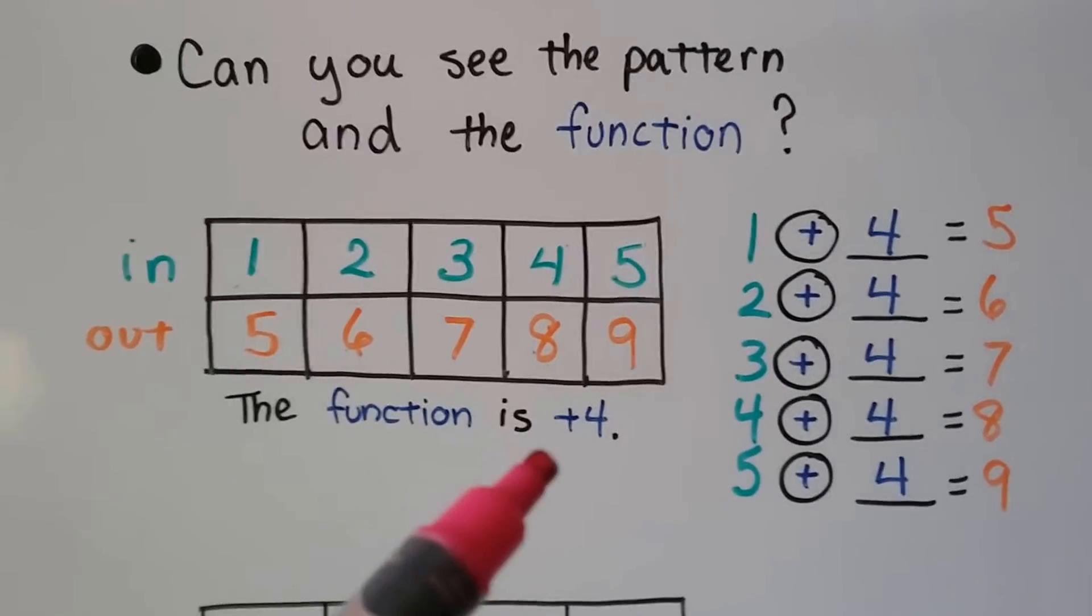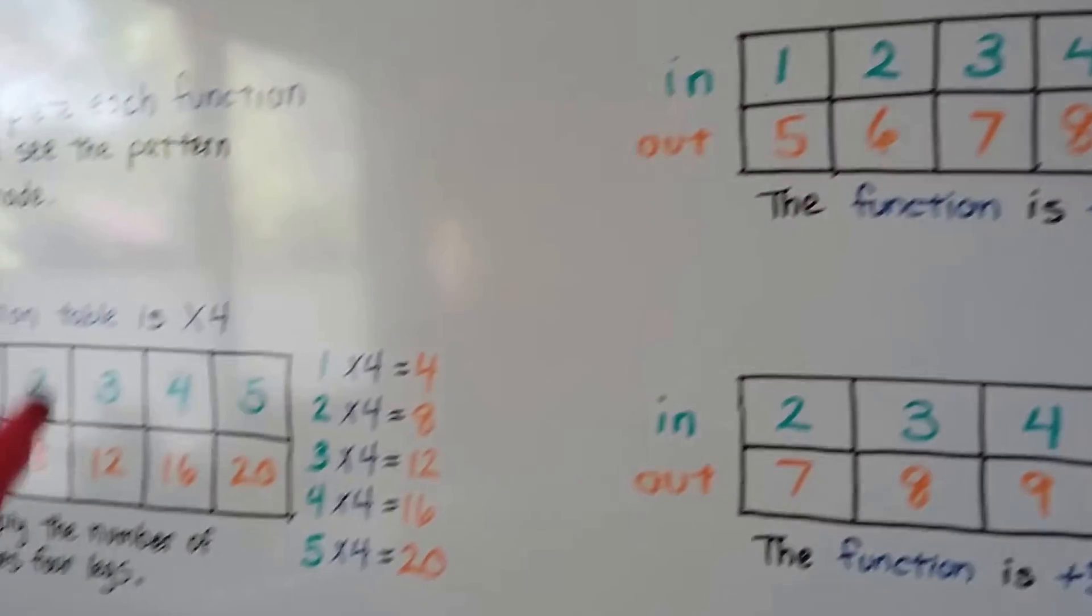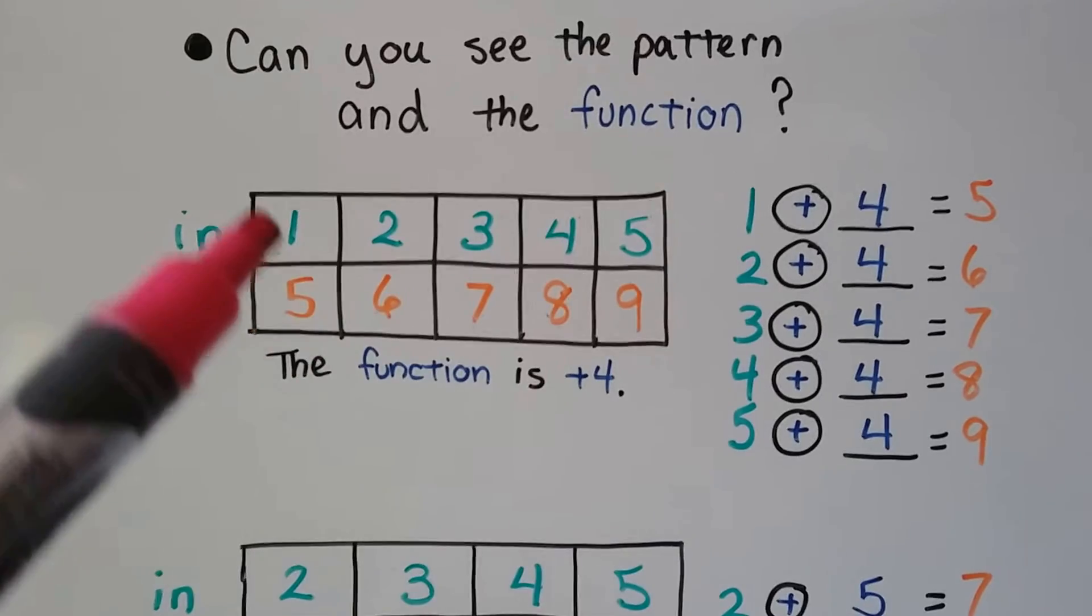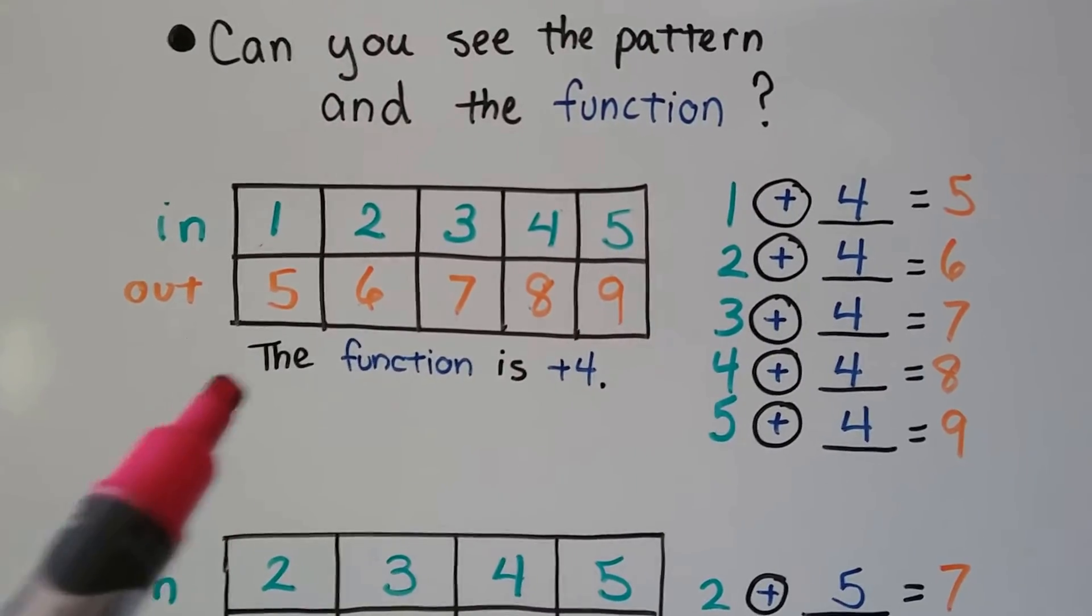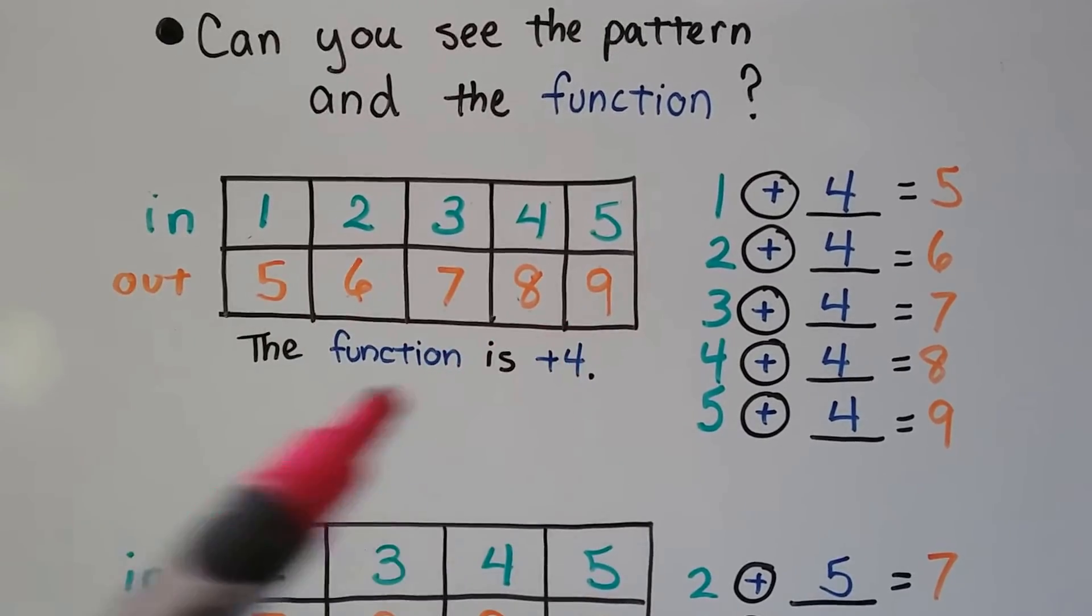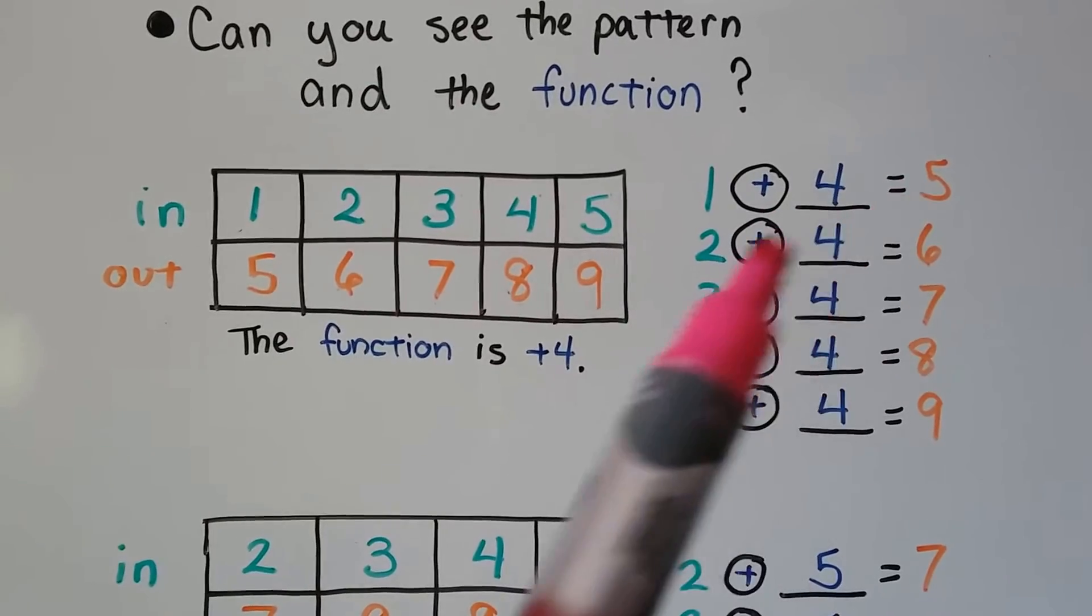In this table, this is a plus 4. So in these we did times 4 and times 2. Well, this one's plus 4. Every number that's going in is having a 4 added to it. 1 plus 4 is 5, 2 plus 4 is 6, 3 plus 4 is 7.